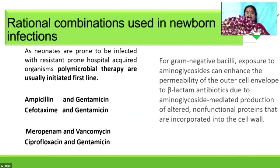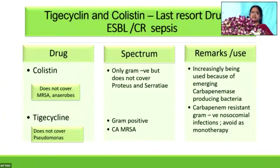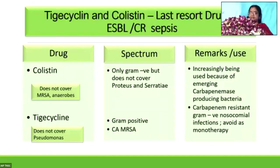In newborn infections, combination therapy is the rule — you cannot give a single antibiotic. Valid combinations include ampicillin-gentamicin, cefotaxime-gentamicin, and piperacillin-tazobactam plus amikacin — though this last has potential nephrotoxicity, it is accepted. Also meropenem plus vancomycin, or ciprofloxacin plus gentamicin. For severe carbapenem-resistant infections where all drugs have been exhausted, the last-resort combination is tigecycline plus colistin: colistin covers all gram-negative organisms, tigecycline covers all gram-positive organisms; colistin doesn't cover MRSA — covered by tigecycline — and tigecycline doesn't cover pseudomonas — covered by colistin. This combination is increasingly used in ESBL or carbapenem-resistant sepsis.